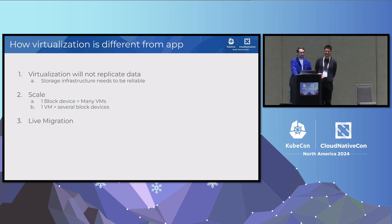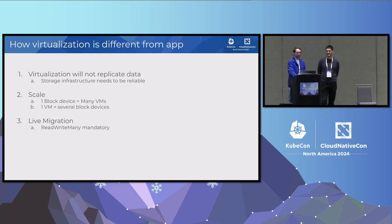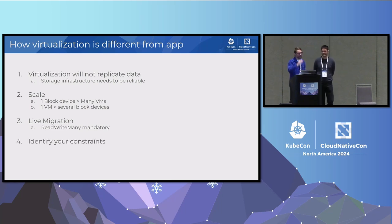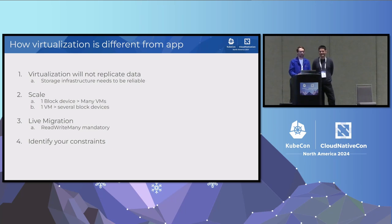With the KubeVirt project, you also want to be able to live-migrate your virtual machine from one node to another, which requires ReadWriteMany access — concurrent access from multiple nodes onto the same block device or volume. Now let's go through different types of Kube architecture using the keywords RPO and RTO.